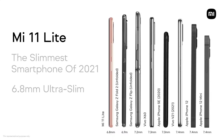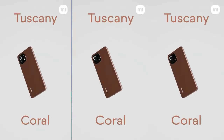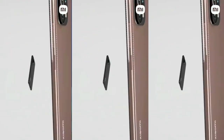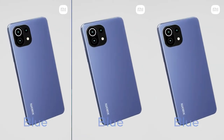The Xiaomi Mi 11 Lite comes with only 6.81mm of thickness. Comparing with other devices: the Galaxy Z Fold 2 unfolded is 6.9mm, the Vivo X60 is 7.3mm, the Vivo V21 is 7.4mm, and the Apple iPhone 12 is 7.4mm. So compared to other brands, the Mi 11 Lite is significantly thinner at just 6.81mm — that is its highlighted feature.